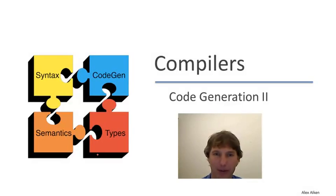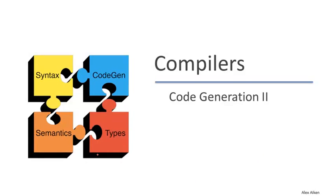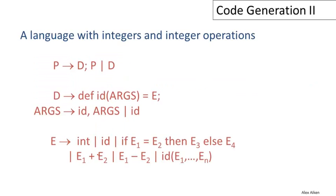This video is a continuation of the previous video where we'll be finishing up code generation for the simple language, dealing with function calls, function definitions, and variable references. Just to remind you, we're working on the simple language and we have a bunch of different kinds of expressions. We dealt with all of these last time except for variable references and function calls, and we also have a function definition. These are the three constructs we'll be looking at in this video.